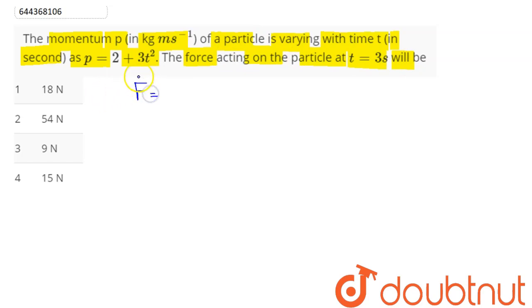So, by Newton's second law of motion, we have the force given as rate of change of linear momentum. Hence, linear momentum varying with time is given in the question as 2 plus 3t square. Therefore, force is equal to d/dt of 2 plus 3t square.